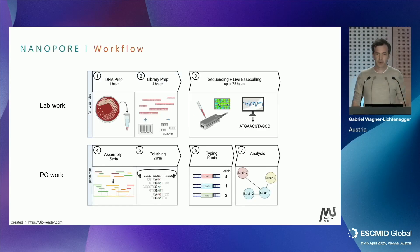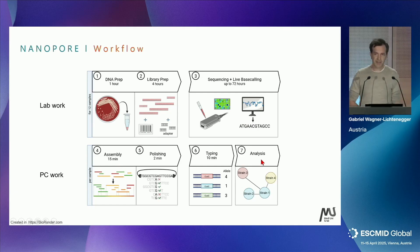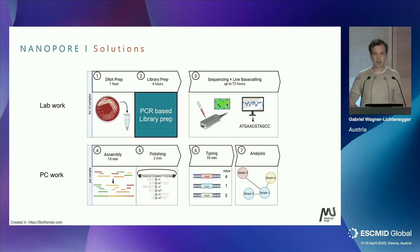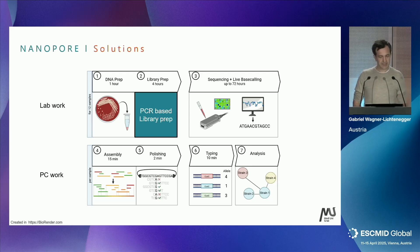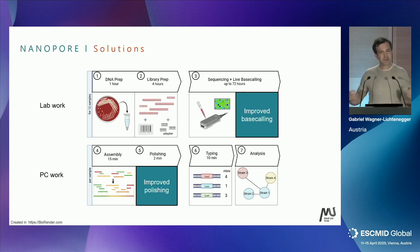Coming from this challenge, there are obviously also solutions. Looking at the sequencing workflow — DNA prep, library prep, attaching barcodes for multiplexing, sequencing with live base calling, assembly, polishing, and typing — the first thing you can do is a PCR-based library prep to get rid of the modifications. We did that, and it works to quite some extent, though it comes with a few other drawbacks. More interestingly, you can also improve the bioinformatics, using more or less the same raw data and just improving the results.